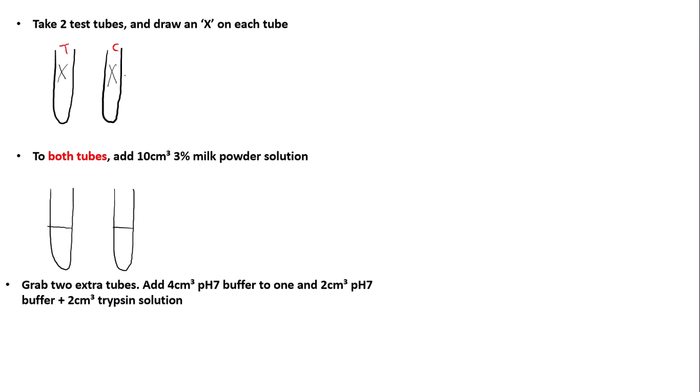The next step is to grab two extra tubes. To one tube add 4 centimetres cubed of the pH 7 buffer, and to the other add 2 centimetres cubed of the pH 7 buffer and 2 centimetres cubed of trypsin solution. The tube with 4 centimetres cubed of pH 7 buffer is your control because it doesn't contain trypsin, and the one with trypsin is your main experimental tube.